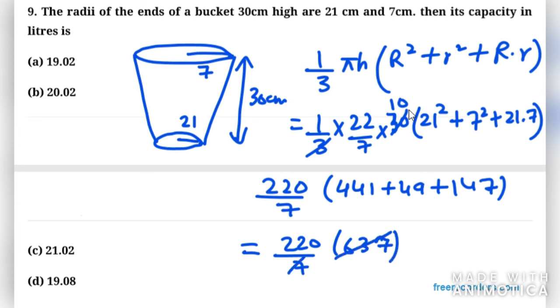So 20,020 cm³. Now the answer is in litres. If you want to convert cm³ into litres, then divide by 1000.